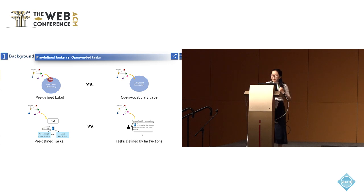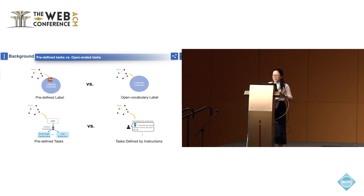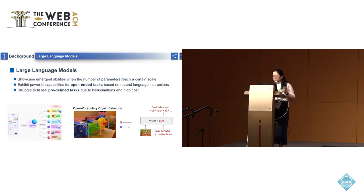Previous methods primarily focus on predefined tasks such as node classification, graph classification, and link prediction. In reality, tasks can change dynamically and are often defined by human instructions. Luckily, large language models like ChatGPT show powerful zero-shot and instruction-following capabilities, and they have transformed diverse fields, especially for open-ended tasks.